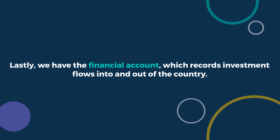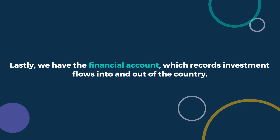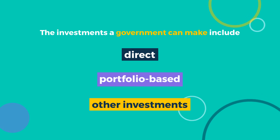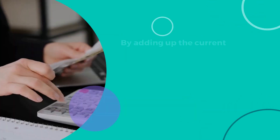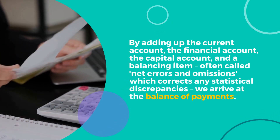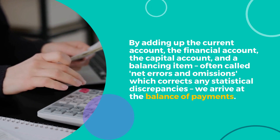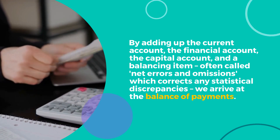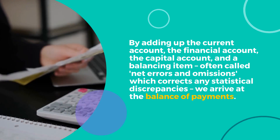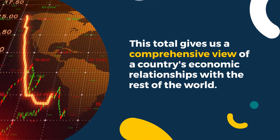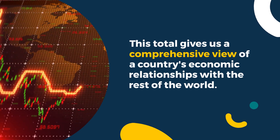Lastly, we have the financial account, which records investment flows into and out of the country. The investments a government can make include direct, portfolio-based, and other investments. By adding up the current account, the financial account, the capital account, and a balancing item — often called net errors and omissions, which corrects any statistical discrepancies — we arrive at the balance of payments. This total gives us a comprehensive view of a country's economic relationships with the rest of the world.